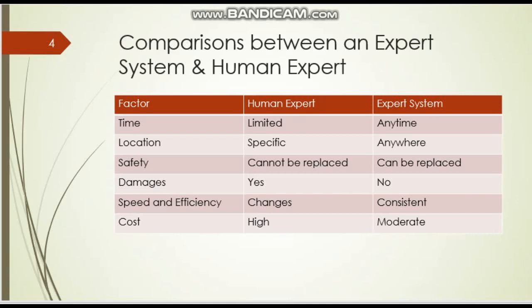If we compare the expert system with the human expert: based on time, it is limited for the human expert, but an expert system can work anytime, anywhere. Location is anywhere for the expert system, whereas the human expert is location-specific. Safety: the expert system can be replaced, but human experts cannot. Based on damage, there is no data loss for the expert system as all data is stored, but the human expert may forget some data.